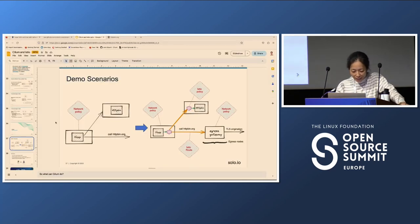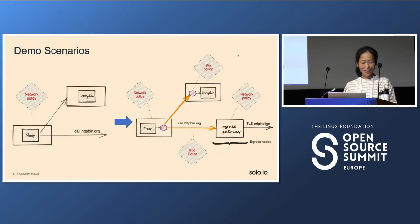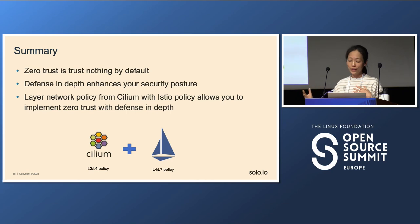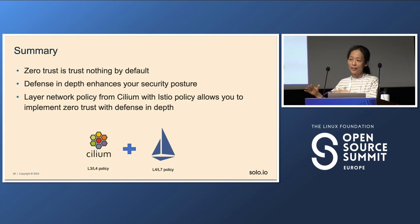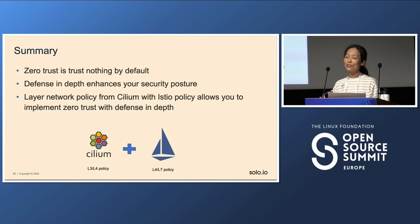I think that's the end of the demo, so let me wrap up. Zero trust means trust nothing by default, and defense in depth really helps enhance your security posture — with network policy from Cilium or other CNIs at layer three and four, and layer seven policy from a service mesh like Istio. We highly recommend layering them together; it's part of the best practices we recommend in the Istio community and by many security companies.